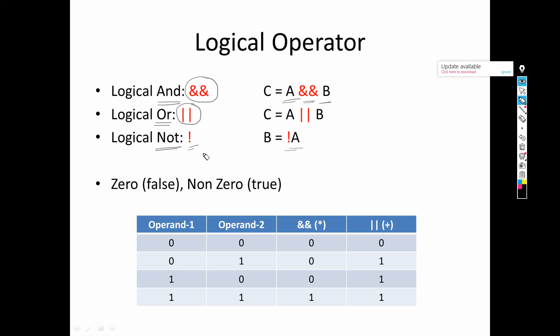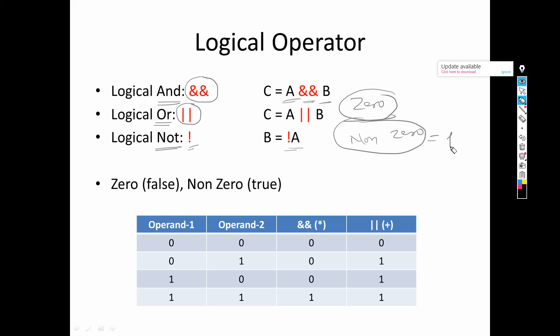Now we need to understand what idea logical operators work on. They work on the idea of zero and non-zero. You might be wondering what zero and non-zero means, so I will explain with an example. In logical operators, your operand is either zero or non-zero, where non-zero is considered as one. Zero is considered as zero — so it works like true and false, where zero is false and one is true.